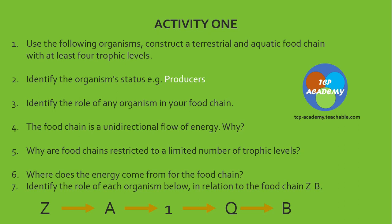Remember, the role of an organism speaks to the niche of the organism — what is it doing? For a food chain or food web, it pretty much confines itself to feeding relationships. When you look at the niche, you have to look at what is being fed on, what is eaten, and what is doing the eating. Pay attention to that when looking at role. The food chain is a unidirectional flow of energy, and you must be able to explain why it is unidirectional.